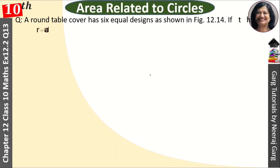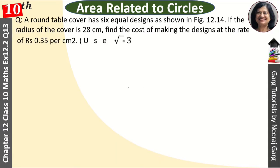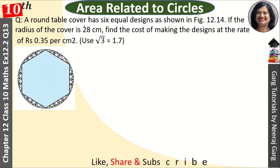Hi, this is Neeraj Garg and you are watching area related to circles. A round table cover has six equal designs as shown in figure 12.14. If the radius of the cover is 28 centimeters, find the cost of making designs at the rate of rupees 0.35 per centimeter square. Use root 3 equals 1.7.